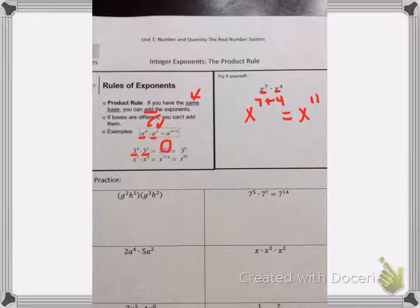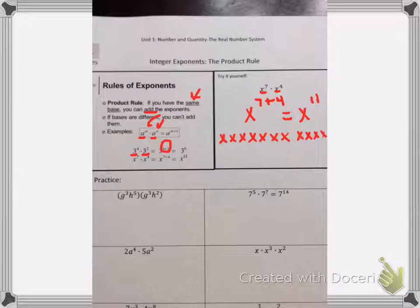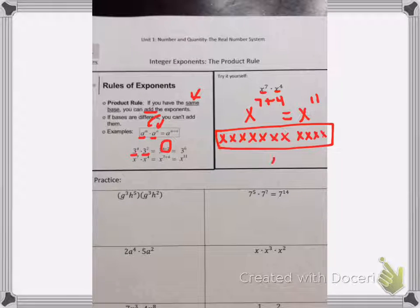So to kind of show you where this rule comes from, let's just think about what that would be like if we were to write it out as exponents. This x to the seventh means I have one, two, three, four, five, six, seven x's. This x to the fourth means I have one, two, three, four x's. If we were to take and just combine those all together, guess how many I have? I have x to the eleventh. This is why that rule will work.